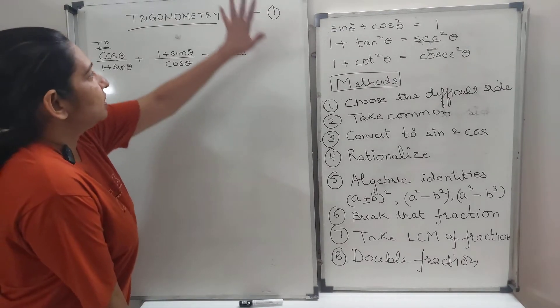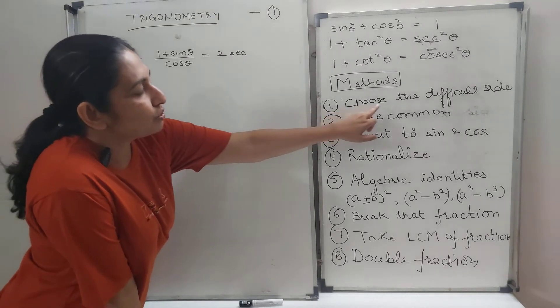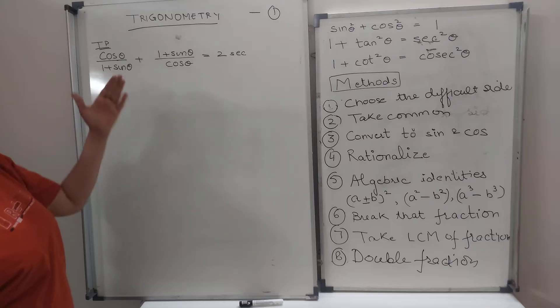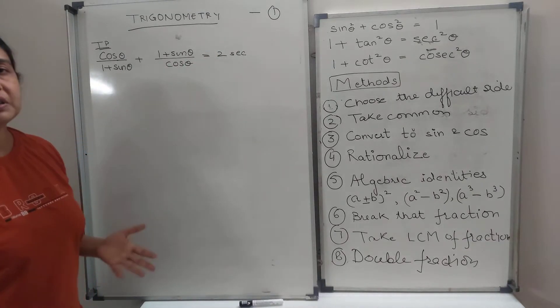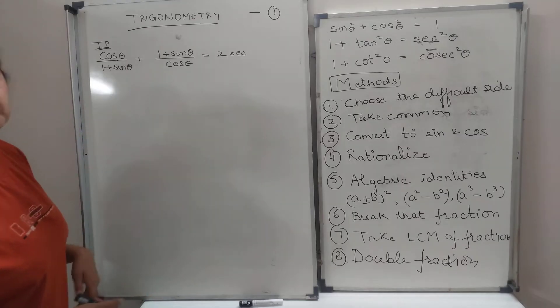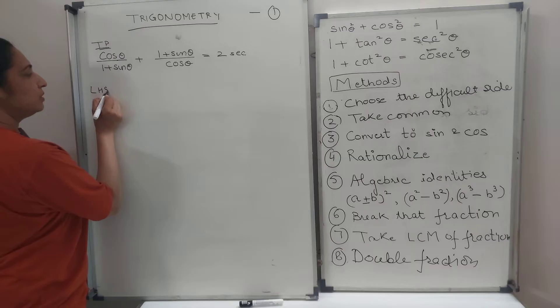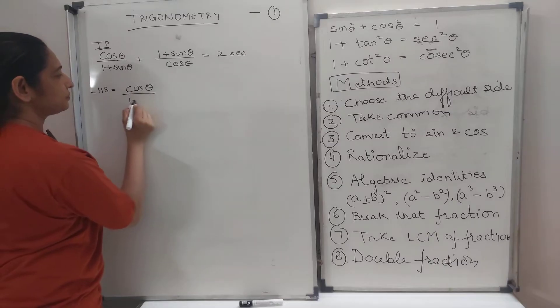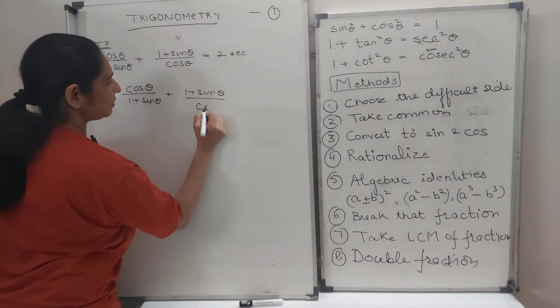So the first thing ever, when you have to do a two-proof, first thing ever is to choose the difficult side. Now, this is the LHS. This is the RHS. Obviously, which looks more complicated, which looks more difficult to you. This side looks more difficult, more complicated. So we'll start from the LHS only. The difficult side. We'll copy down the difficult side.